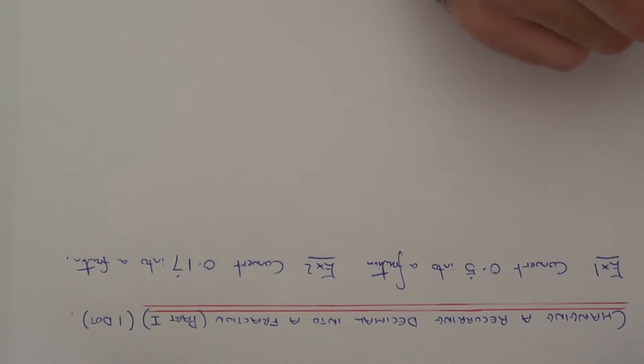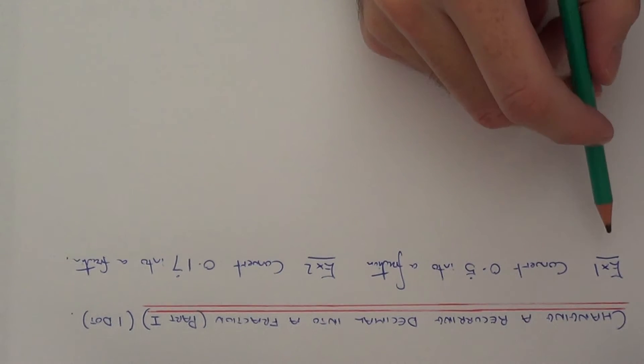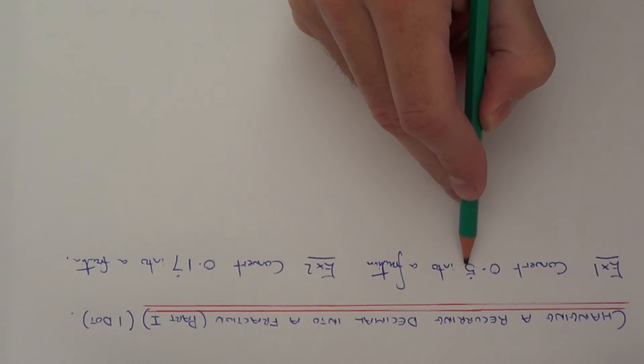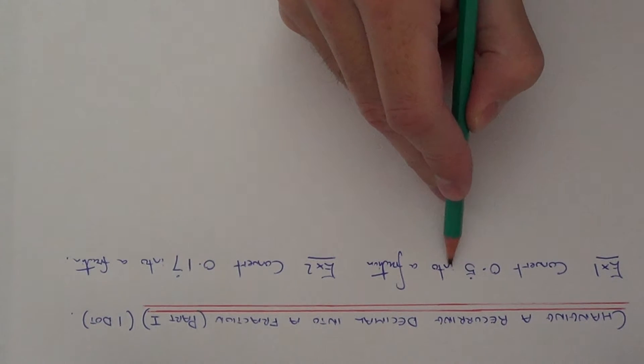Today I'm going to show you how to convert a recurring decimal into a fraction. So let's have an example one then. We need to convert 0.5 with the dot on the 5 into a fraction.